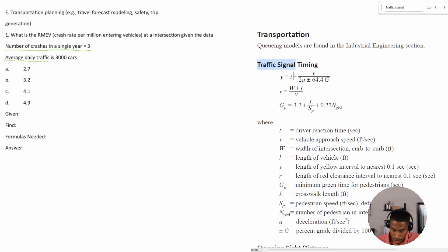What are we trying to find? We're trying to find the crash rate per million or the RMEV. And so are there any formulas needed for this? The answer to that is I don't know what RMEV is and I'm just going to do a search because I think that would get me close.